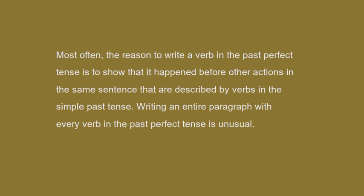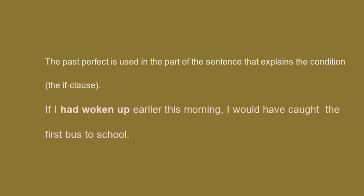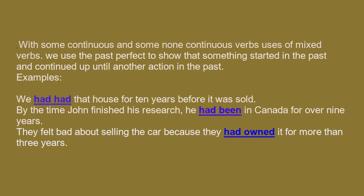Most often, the reason to write a verb in the past perfect tense is to show that it happened before other actions in the same sentence that are described by verbs in the simple past tense. Writing an entire paragraph with every verb in the past perfect tense is unusual. The past perfect is used in the part of the sentence that explains the condition — the if-clause. For example: If I had woken up earlier this morning, I would have caught the first bus to school.